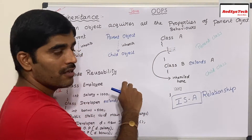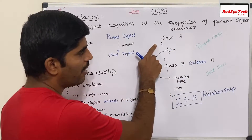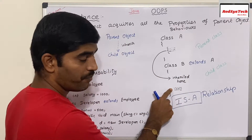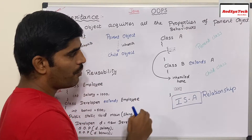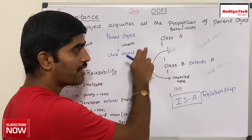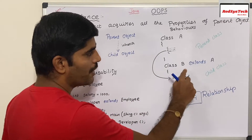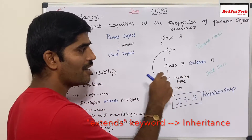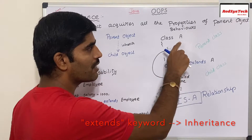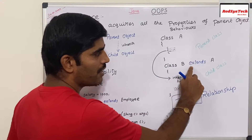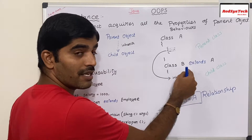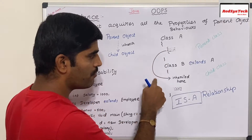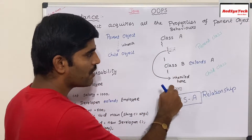So let's say I have a class called class A with some code, and similarly I have another class called class B with some code. Now I want to inherit the properties and behaviors from class A into class B. So what I should do is write the keyword 'extends'. This is a Java keyword, which tells Java that I want to inherit the properties from class A. When I write 'extends A', it means class B is of type A, and by default whatever code is written in class A will be available in class B. This is called inheritance.